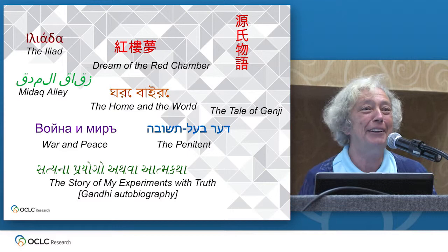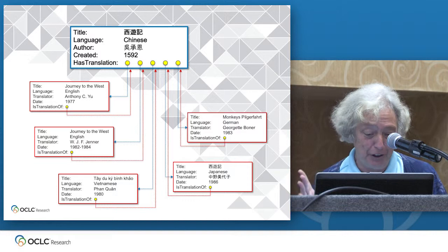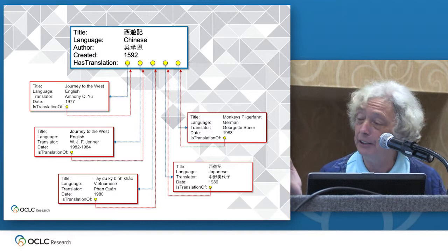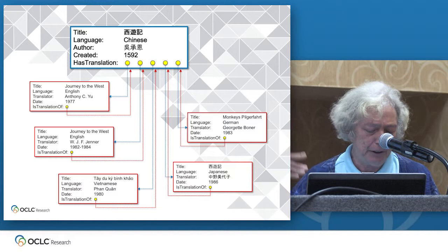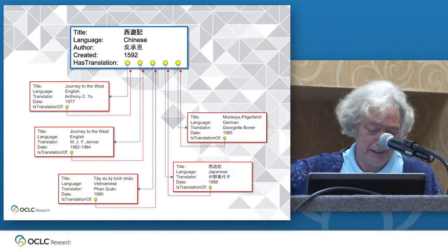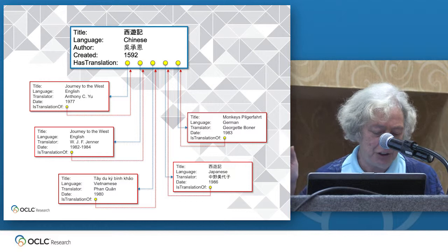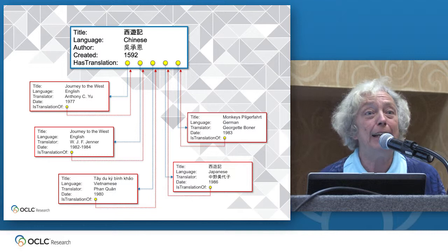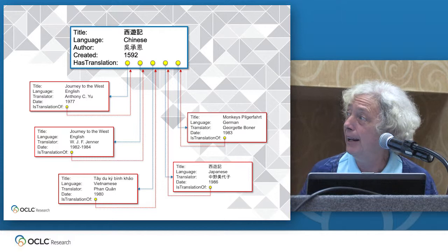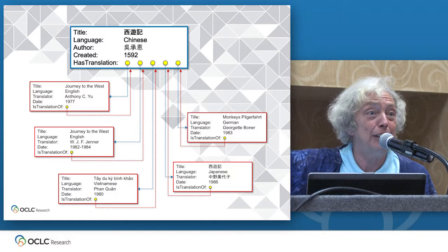The relationship of a work with an author and its associated translations with their respective translators is relatively straightforward. This diagram captures the relationship by two reciprocal links: one from the original Chinese book, written in the Ming Dynasty, in the blue box on top, through its property 'has translation' pointing with the blue arrows to each translation in the red boxes, and one from each translation back to the original Chinese work with the red arrows, through the property 'is translation of.' A work can have many translations, and there can be multiple translations in the same language, such as the two English translations shown here.